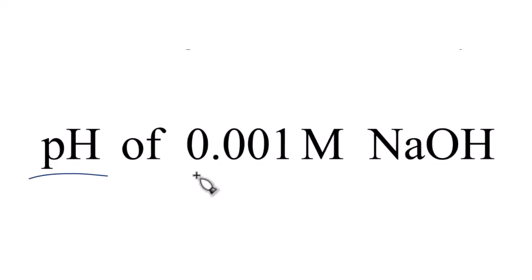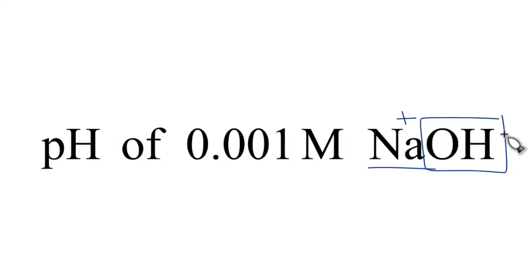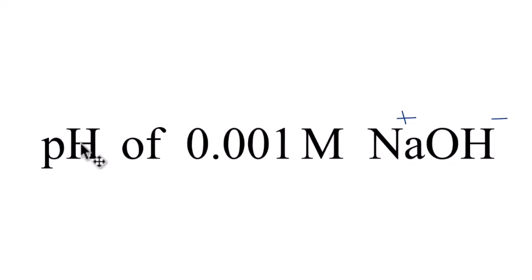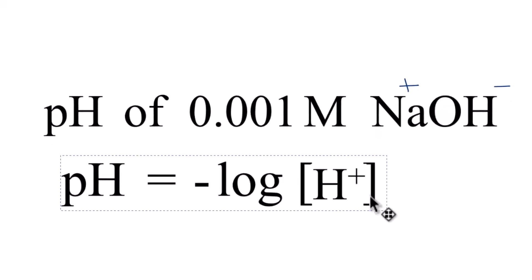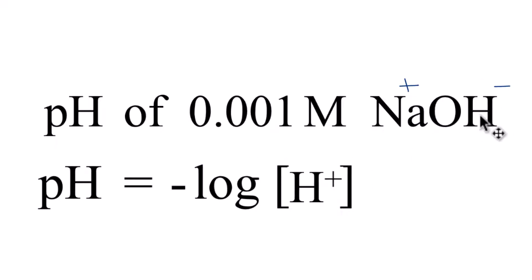Let's find the pH of a 0.001 molar solution of sodium hydroxide. Here's what you need to realize when you try to find the pH. We have sodium, that's Na+, it's in group one on the periodic table, and then OH. Whenever you have a metal bonded to OH, this is the hydroxide ion — the whole thing has a negative charge. So when we have pH, the H is H+, the hydrogen ion. We don't have that here. We don't have any hydrogen ions; we have a hydroxide ion. So we need to use a different formula.